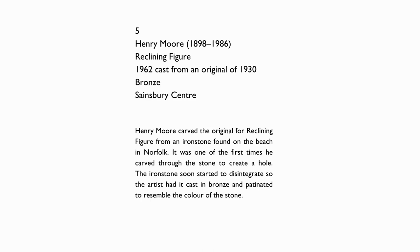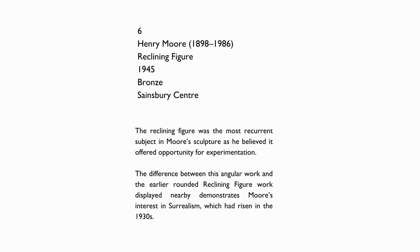Henry Moore carved the original for a reclining figure from an ironstone found on the beach in Norfolk. It was one of the first times he carved through the stone to create a hole. The ironstone soon started to disintegrate, so the artist had it cast and bronzed and patinated to resemble the colour of the stone. The reclining figure was the most recurrent subject in Moore's sculpture, as he believed it offered opportunity for experimentation. The difference between this angular work and the earlier rounded reclining figure displayed nearby demonstrates Moore's interest in surrealism, which had risen in the 1930s.